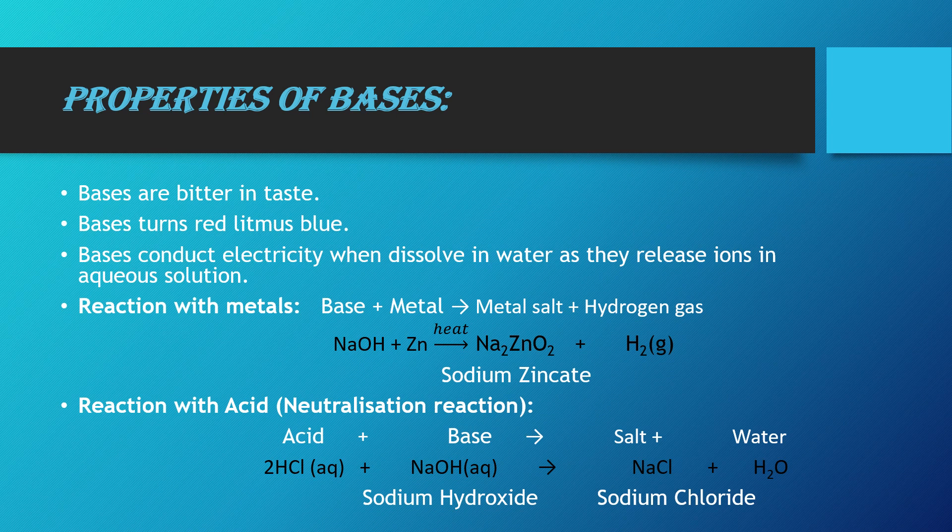The next chemical property is the reaction of a base with an acid. Just as acid reacts with base in a neutralization reaction, the reaction of base with acid is also a neutralization reaction. Whenever acid reacts with base, it produces salt and water. This reaction is called a neutralization reaction. For example, when hydrochloric acid reacts with sodium hydroxide, it produces salt — that is sodium chloride — and water.